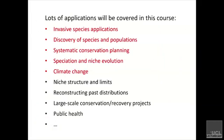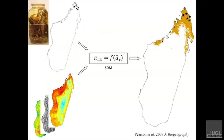Let's move on to a second classic application — the discovery of species and populations. A fundamental problem in conservation biology is that we simply don't know that much about biodiversity. We know a fraction of the species that are actually out there, and for those species we do know about, we very often have just a few occurrence records with no good estimate of their distributions. Here we're interested in using these models to try and accelerate the discovery of unknown species and unknown populations.